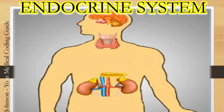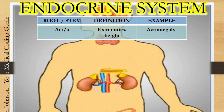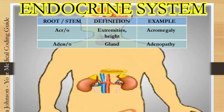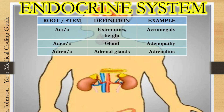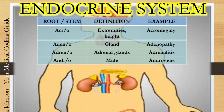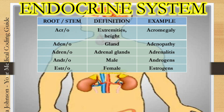We will now see the root or stem words pertaining to the endocrine system. First, acro — acro means extremities or height. Example: acromegaly, which means abnormal growth or abnormal enlargement of your extremities or height. Next, adeno — adeno means gland. Example: adenopathy, which means a disease or disorder of the gland. The next one is adreno — adreno means adrenal glands. Example: adrenalitis, which means inflammation of the adrenal gland. Next, andro — andro means male. Example: androgens, which produces the male hormones. The next one is estero — estero means female. Example: estrogens, which produces the female hormones.